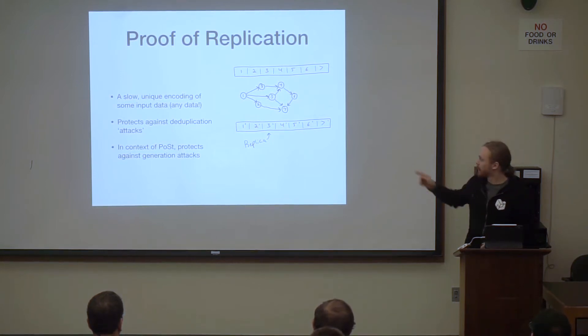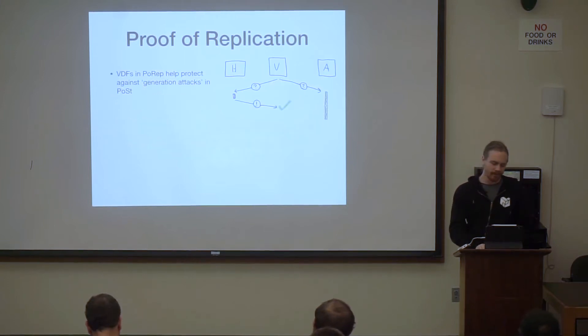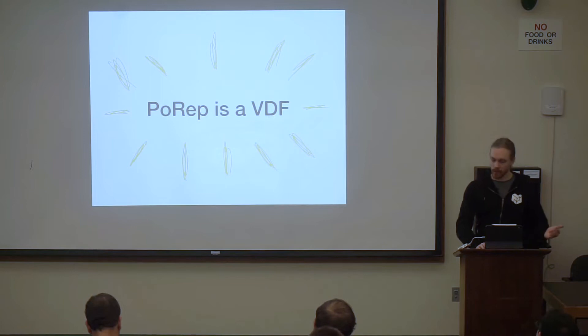So now in order to encrypt node 7, you have to encrypt 2, 5, and 6. In order to encrypt 6, you have to encrypt 4, and then that requires 5 and 3, which requires 1. And so in order to re-encrypt any random node in the graph, it requires a long sequential computation.